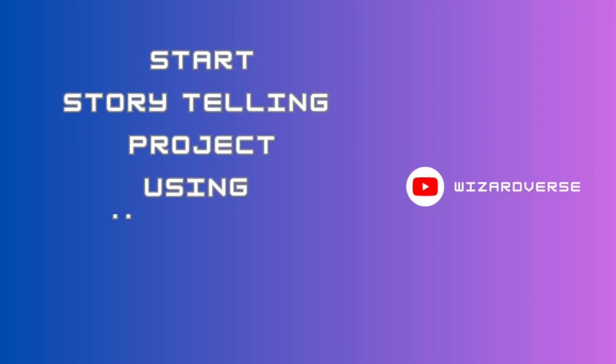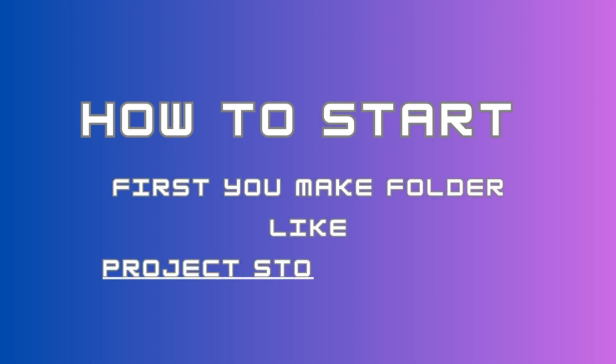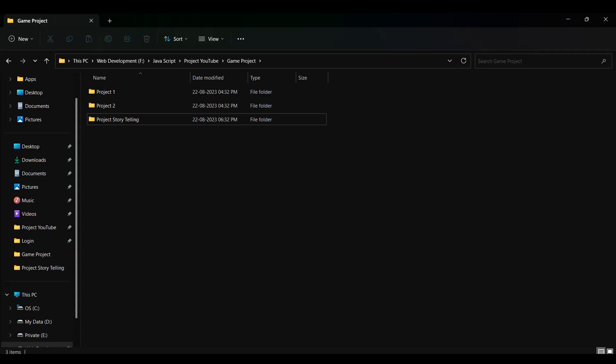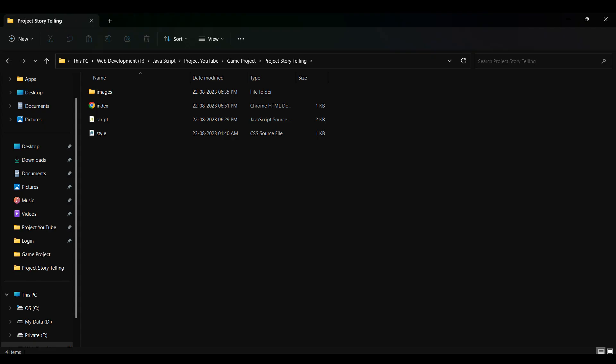Hey everyone, welcome back to our channel. Today I am going to teach you how to make a storytelling project using JS. First, you need to create a separate folder for the storytelling project. Then you need to create separate pages for coding like index.html, style.css, and script.js.